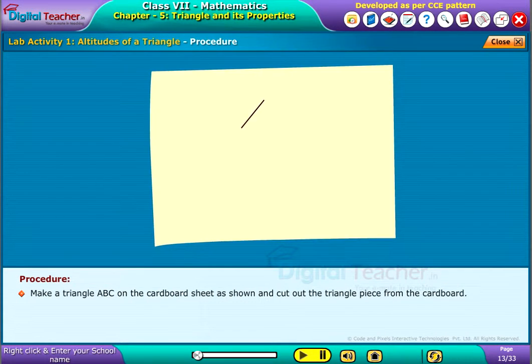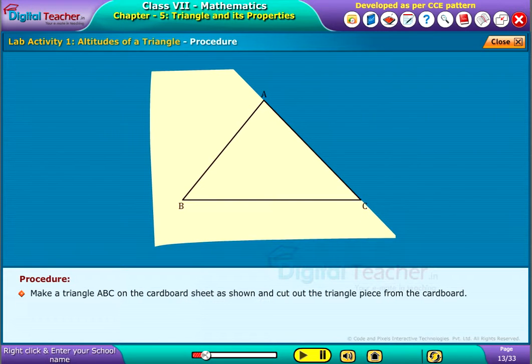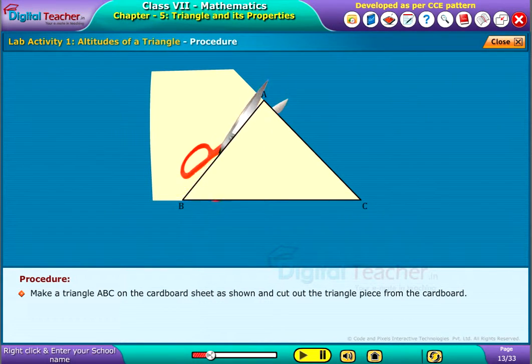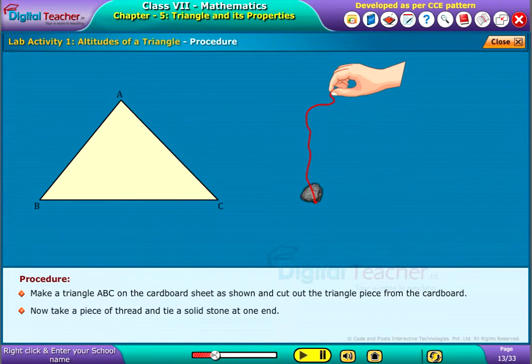Make a triangle ABC on the cardboard sheet as shown and cut out the triangle piece from the cardboard. Now, take a piece of thread and tie a solid stone at one end.